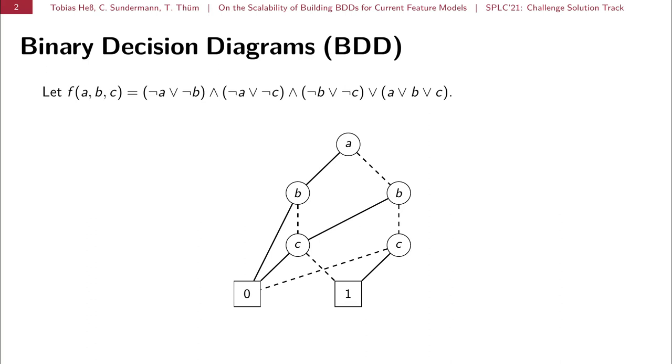On the notation quickly, a straight edge denotes the assignment of 1 or true to the variable in the node above, and a dashed edge denotes the assignment of 0 or false to the variable in the node above.